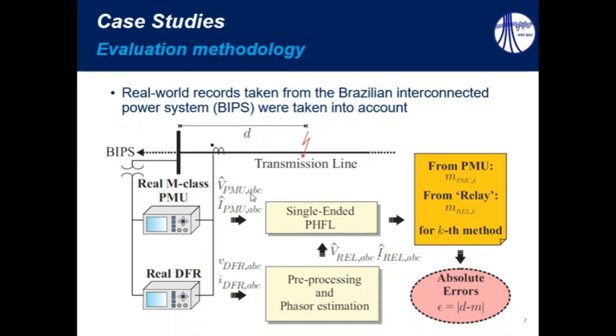Then, since PMU phasors and relay phasors are obtained, we apply single-ended phasor-based fault location methods, resulting in the estimations N-PMU and N-relay. And finally, we calculate the absolute error, considering the absolute value of the difference between the estimated fault distance and the fault distance reported by line inspection crews for each analyzed case.